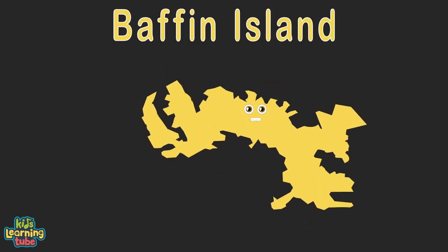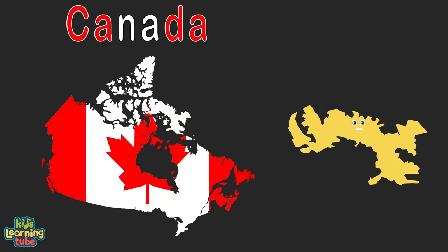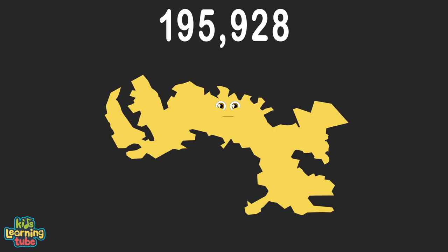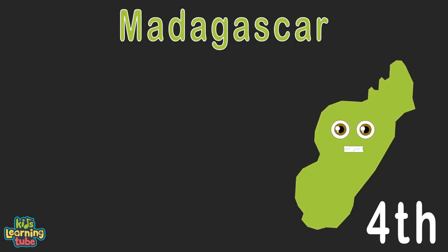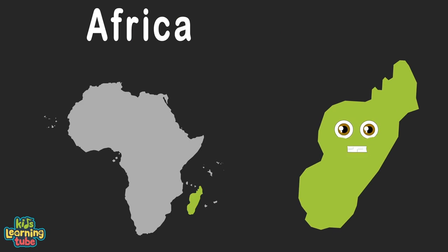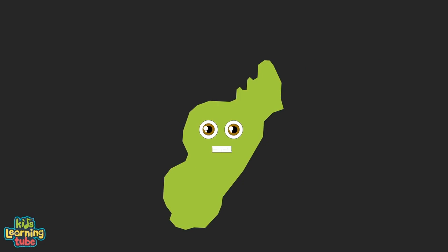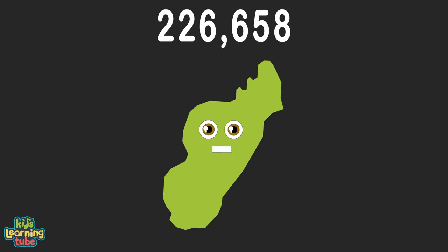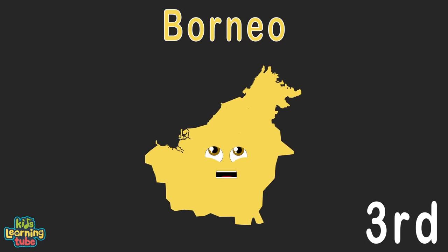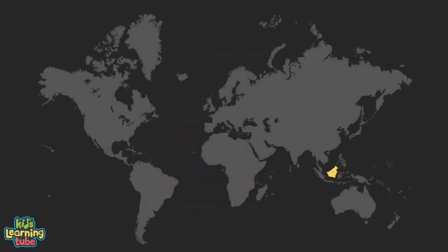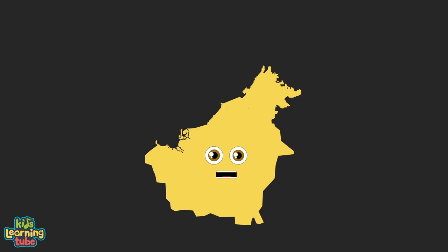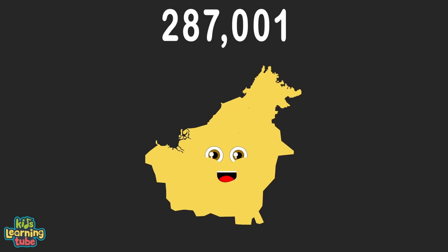I'm Baffin Island, also in Nunavut, Canada. I touch the North Atlantic and the Arctic Ocean, with 195,928 square miles. I'm Madagascar, off the coast of Africa — an island country. I touch the Indian Ocean and Mozambique Channel, with 226,658 square miles. The island of Borneo is Asia's largest island. I touch a vast amount of seas with 287,001 square miles.